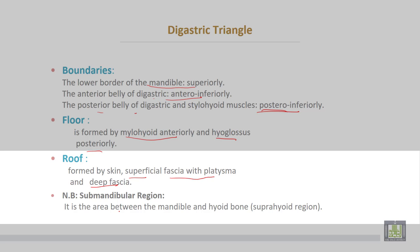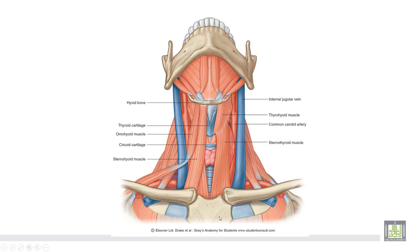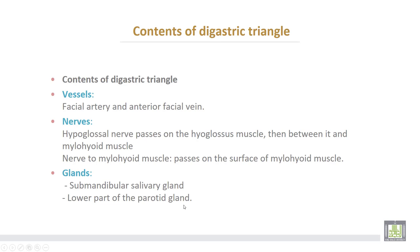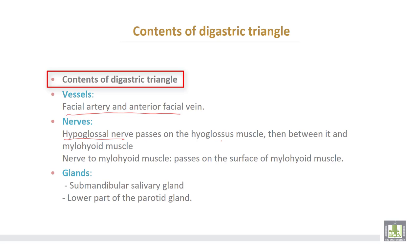The submandibular region means the area between the mandible and the hyoid bone, sometimes called the suprahyoid region. The contents of the digastric triangle include: blood vessels such as the facial artery and anterior facial vein; nerves including the hypoglossal nerve, which passes on the hyoglossus muscle then between the hyoglossus and mylohyoid muscles; and the nerve to mylohyoid, which passes on the surface of the mylohyoid muscle. The glands in the digastric triangle are the submandibular salivary gland and the lower part of the parotid gland.